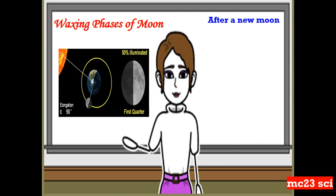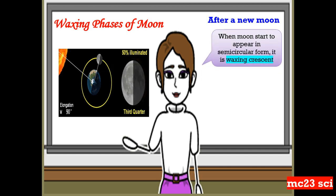So after a new moon, this is what we call the waxing phases of the moon. When the moon starts to appear in a semicircular form, it is called the waxing crescent.